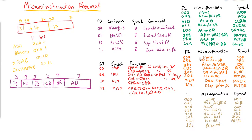Field 2 also has 3 bits with 8 combinations: 000 = NOP; 001 = AC − DR (subtraction); 010 = AC OR DR; 011 = AC AND DR; 100 = DR ← M[AR] (memory read); 101 = DR ← AC (store intermediate result); 110 = DR ← DR + 1 (increment DR); 111 = DR[0–11] ← PC (store program counter content into DR).